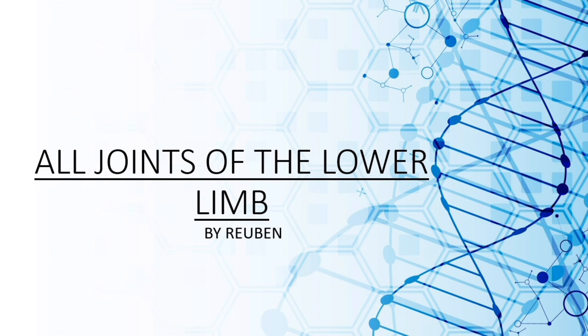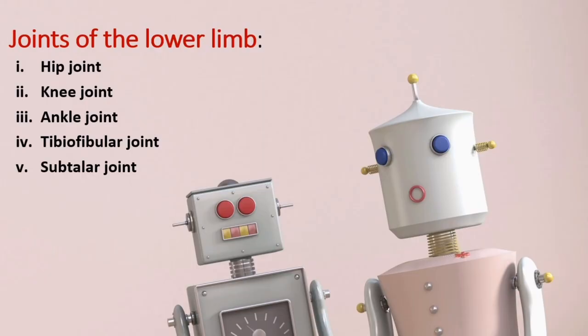Joints of the lower limb. A joint is a junction between two or more bones. Joints of the lower limb include the hip joint, knee joint, ankle joint, tibiofibular joint, and the subtalar joint.